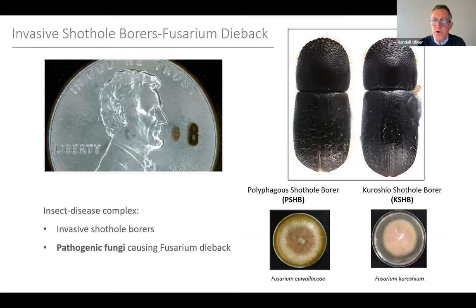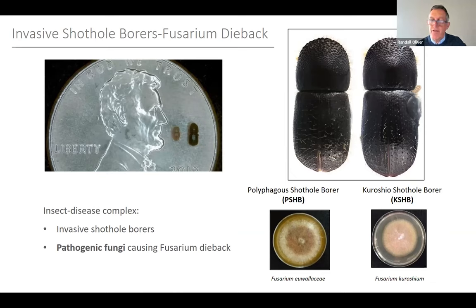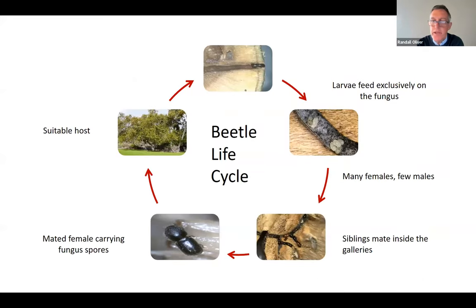Invasive shothole borers — this term refers to two species of ambrosia beetles that visually are indistinguishable from each other. You can tell which is which with DNA analysis, but they are two different species, so keep that in mind. Each species contains its own pathogenic or tree-killing fungi that cause the disease, Fusarium dieback.